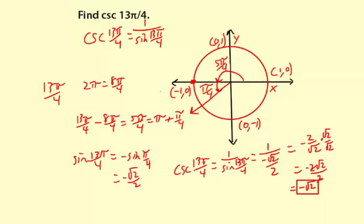Let's review the process. First, I have my unit circle, and I reminded myself that cosecant is the reciprocal of sine. Then I found the coterminal angle with 13π over 4, which turned out to be 5π over 4. Then we found the reference angle for 5π over 4, which is simply π over 4. Since 5π over 4 is in the third quadrant, the sine of 13π over 4 — which equals the sine of 5π over 4 because they're coterminal — is the negative of sine π over 4, which is √2 over 2, or 1 over √2. Then we applied the reciprocal to get the cosecant.